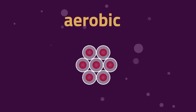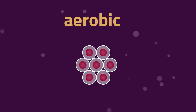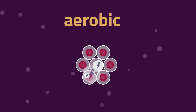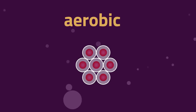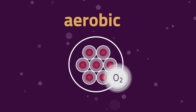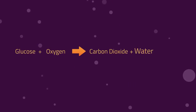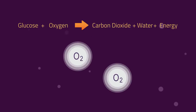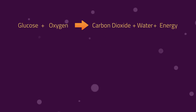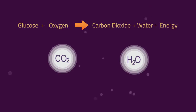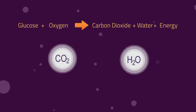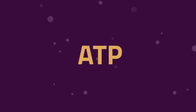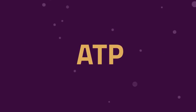Let's start by looking at aerobic respiration. Aerobic respiration releases energy in cells by breaking down food substances whilst in the presence of oxygen. It is represented by this simplified equation — but don't forget the energy which is released. Glucose is broken down by oxygen to release the byproducts of carbon dioxide and water. Energy is released, which is then used to make a special energy molecule called ATP. ATP is how energy is stored for later use by the body.